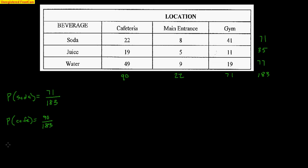I could say, what's the probability that somebody went to the cafeteria or got a soda? Now, this means that anybody that went to the cafeteria or got a soda is going to make me happy. So I got to think, okay, cafeteria, 90 out of 183 students went to the cafeteria to get the vending machine. Plus, well, 71 students out of 183 bought a soda.